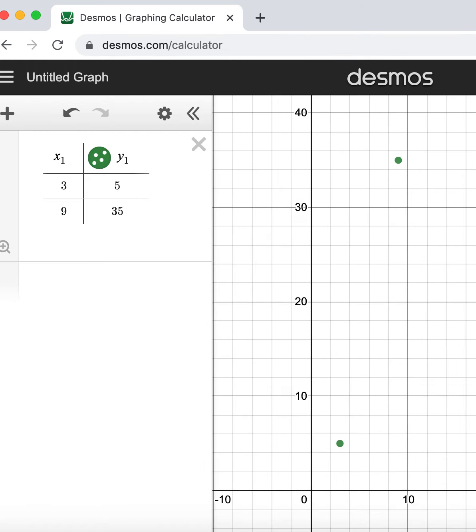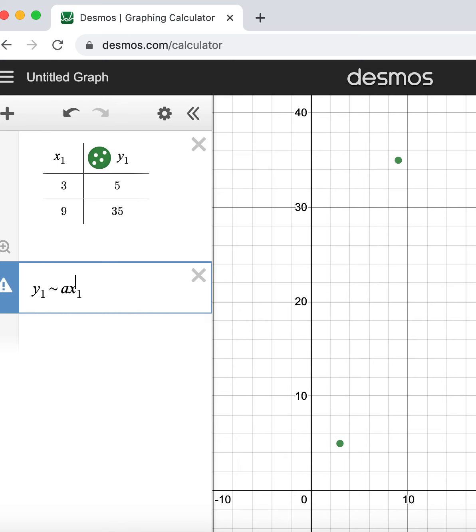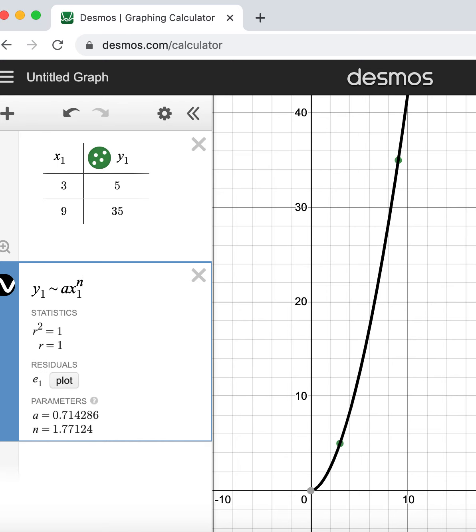It's going to be similar to an exponential type of graph, but just a little different. A power function has the form of y equals ax raised to a power, but we don't know what the exponent is.